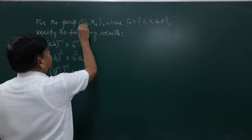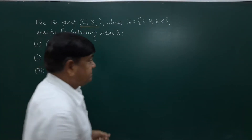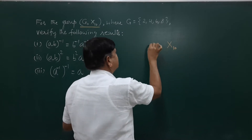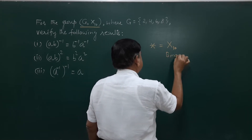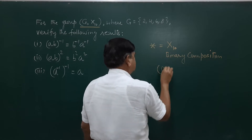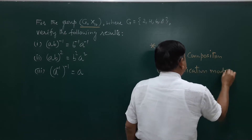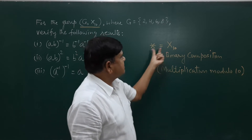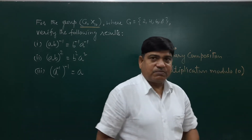For the given group, J is a non-empty set and this is the binary composition — star — which is multiplication modulo 10. This is the name of this particular binary composition. So A star B means multiplication modulo 10.